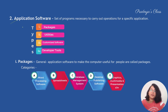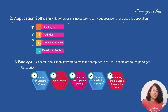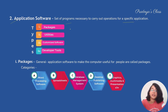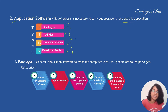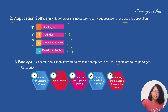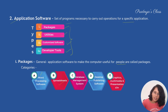The second type of software is application software — programs used for carrying out specific applications. Application software is categorized into four types: packages, utility software, customized software, and developer tools. Packages are general application software that make computers useful for people. Categories include word processing software like MS Word, spreadsheets like MS Excel, database management systems, desktop publishing software, and graphics, multimedia, and presentation software.